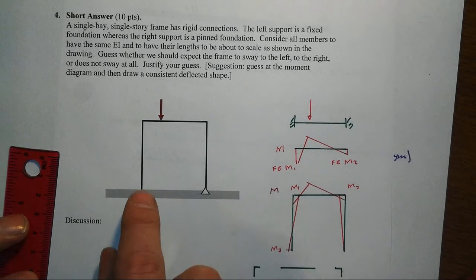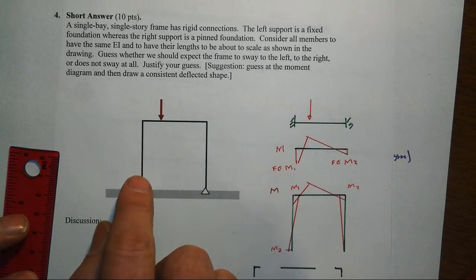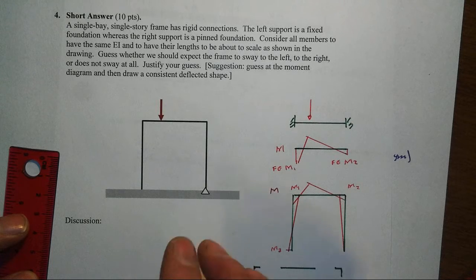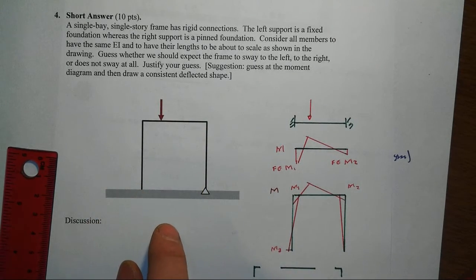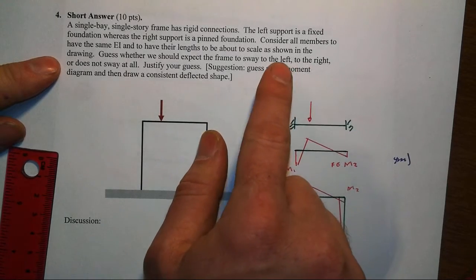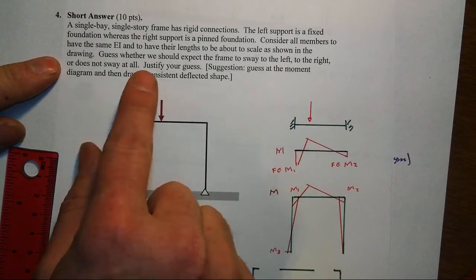The way it's drawn, the beam is relatively the same length as the columns. There's a small, looks like there might be a slightly shorter beam than a column. But we're asked to make a guess whether the frame sways to the left, to the right, or does not sway at all.